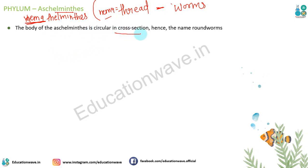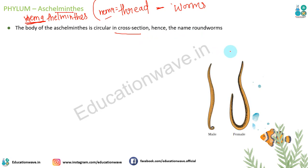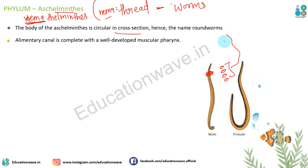The body of Aschelminthes is circular in cross section, hence the name round worms. Jab aap inka cross section karenge toh circular cross sections aate hain, isliye inhe round worms bhi kehte hain.